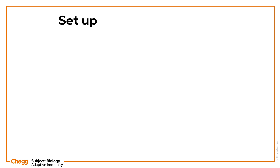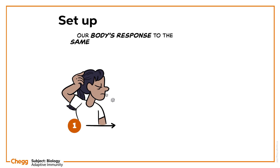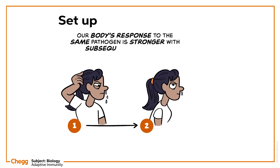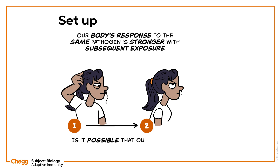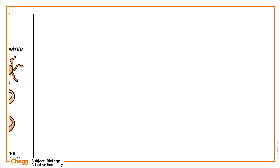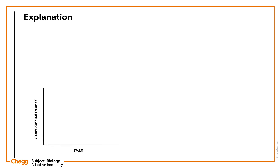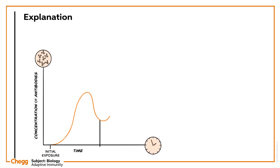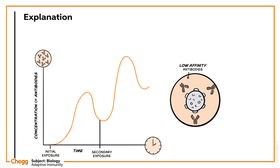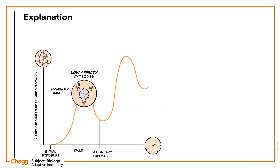You may have wondered why our body's response to the same pathogen is stronger with subsequent exposure. Is it possible that our body can memorise these invasions? Our recovery time for flu, common cold or any other small infection gets shorter after the first time exposure and recovery. This is acquired immunity working for us. Our body uses specific antigens to mount a strategic immune response upon exposure to pathogens.